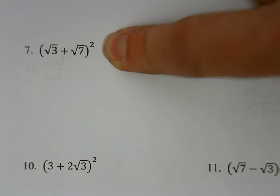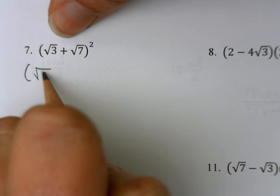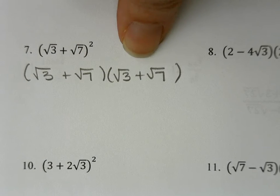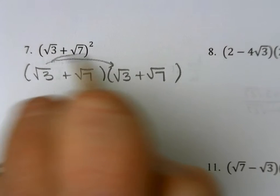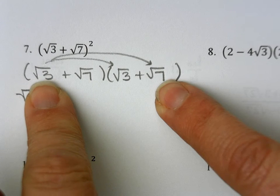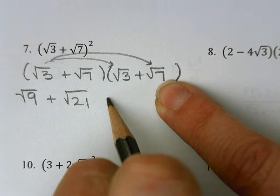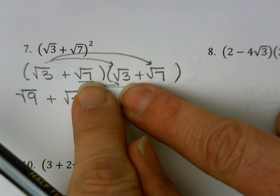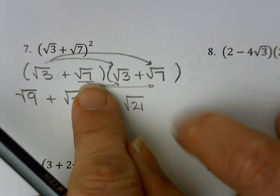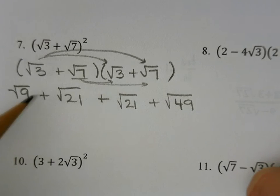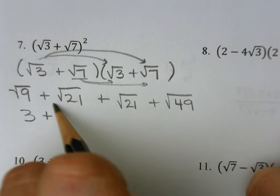Now let's take a look at question number 7. When you have something squared, that means you have 2 of exactly the same, so I'm just going to write this twice. Squared means I have 2 of exactly the same, and then I want to distribute. So I'm going to multiply the square root of 3 to both terms. Square root of 3 times the square root of 3 is the square root of 9, and then the square root of 3 times the square root of 7 is the square root of 21. They don't have to be the same when we're multiplying.